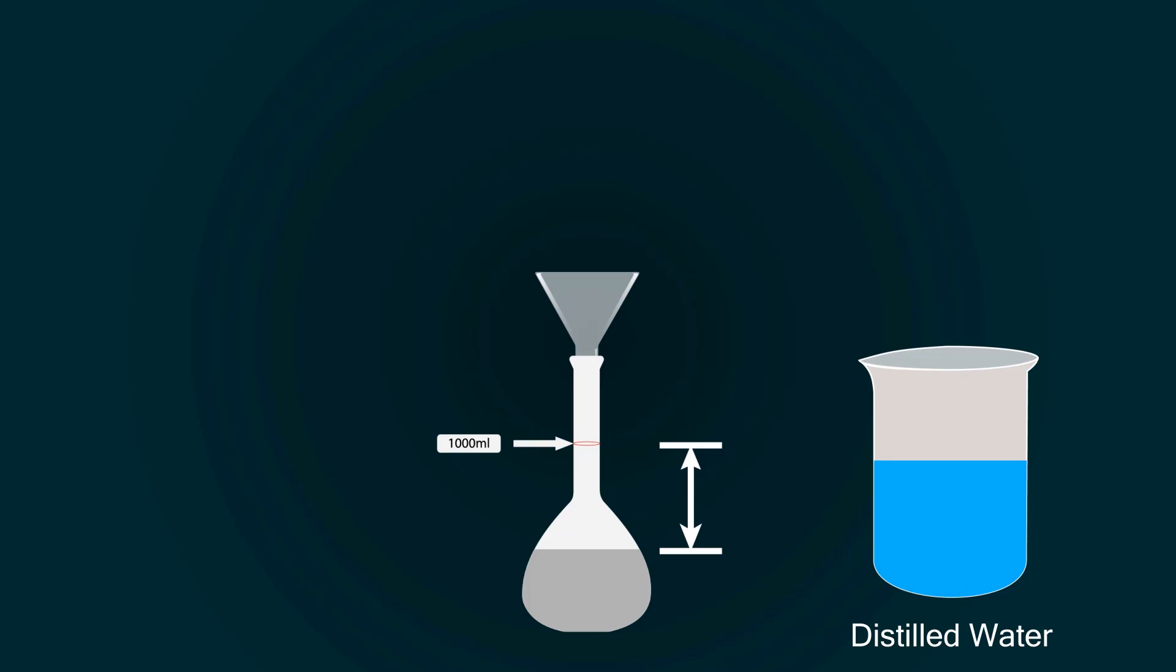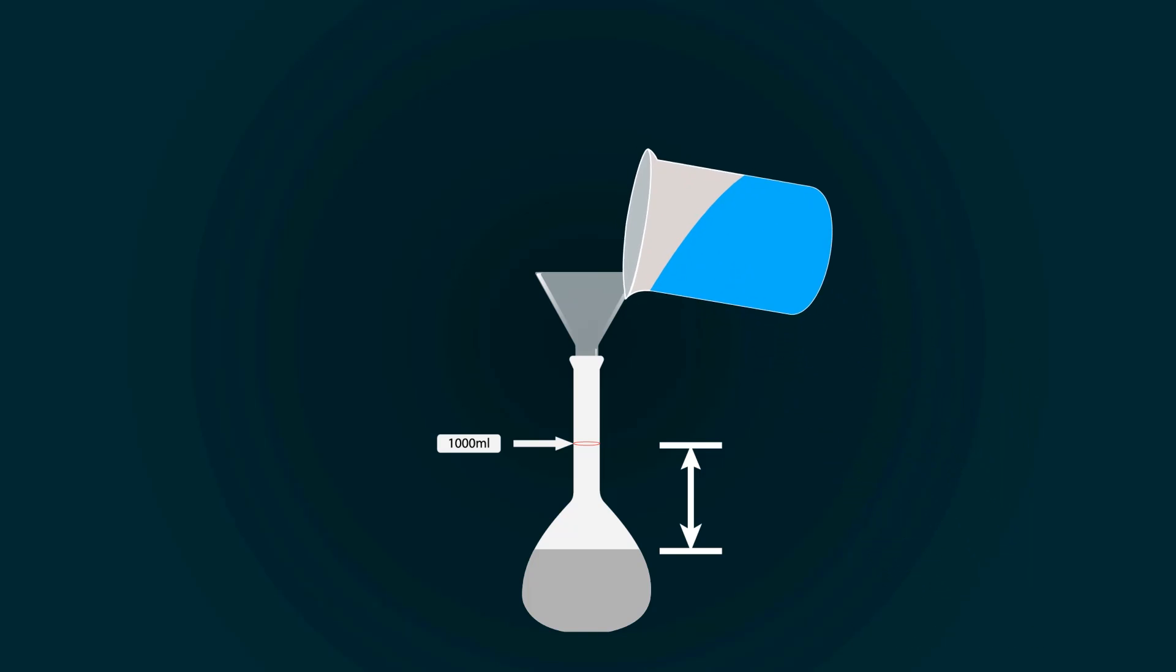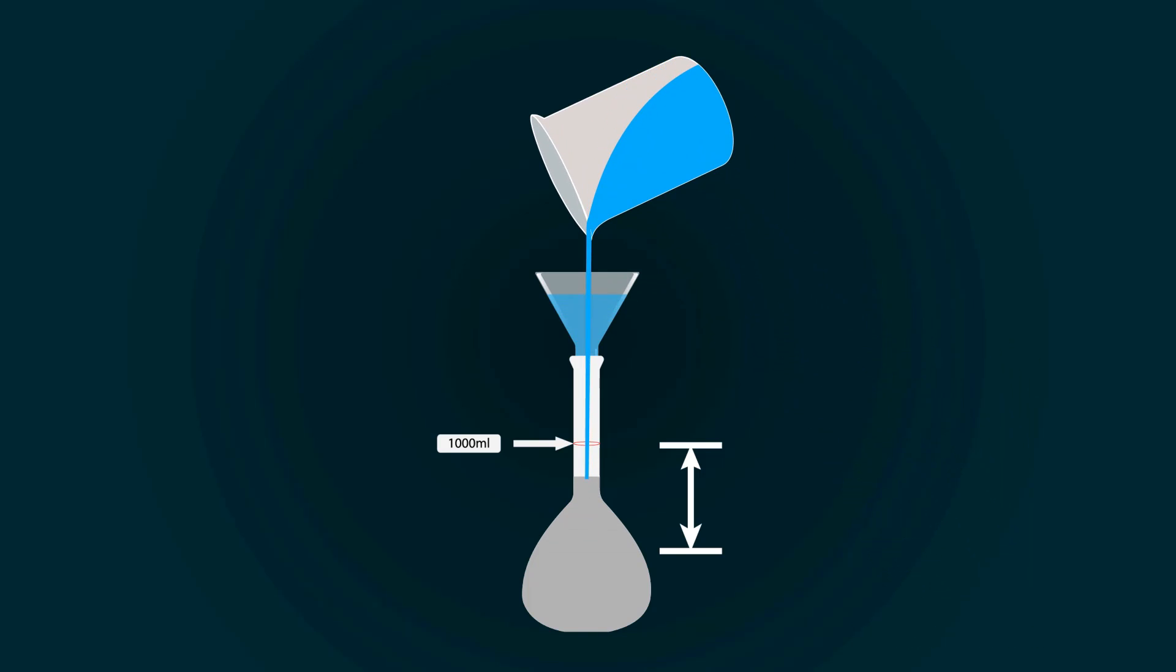So, take more distilled water into an empty beaker and start pouring it into the volumetric flask.